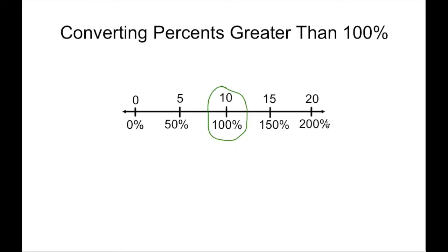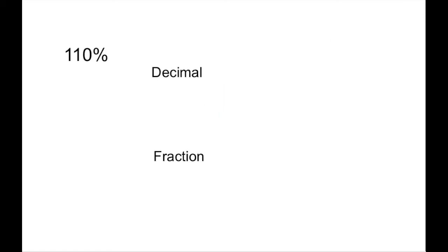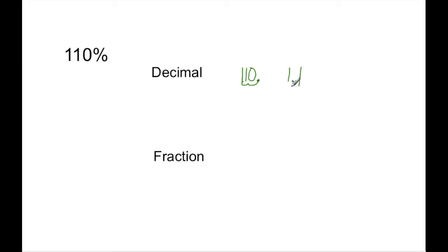We can use percents bigger than 100%, and we can also use ones smaller than 1%. The way we convert these is just the same as before, but it looks a little different. So if we have 110%, we're still going to put that invisible decimal point there, get rid of the percent sign, and move it over 2 places to the left like we did before. So 110% becomes 1.1.